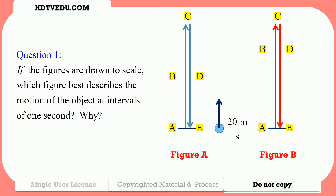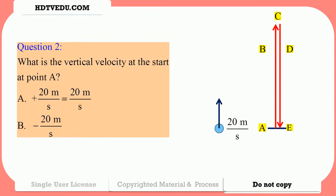Question number 1: If the figures are drawn to scale, which figure best describes the motion of the object at intervals of 1 second? If you choose figure A, mark A. If you choose figure B, mark B. Question number 2: What is the vertical velocity at the start at point A? Is it positive 20 meters per second or negative 20 meters per second?